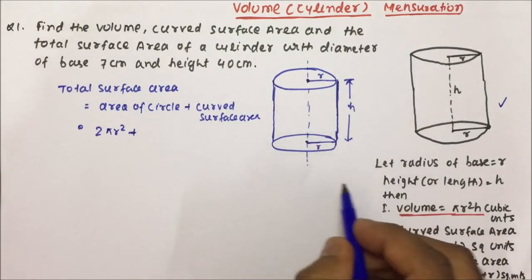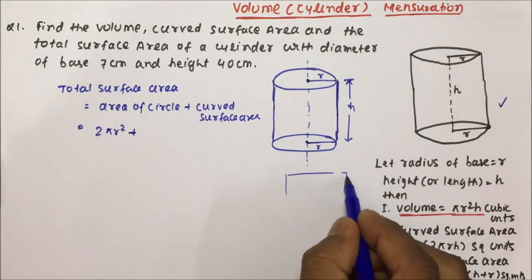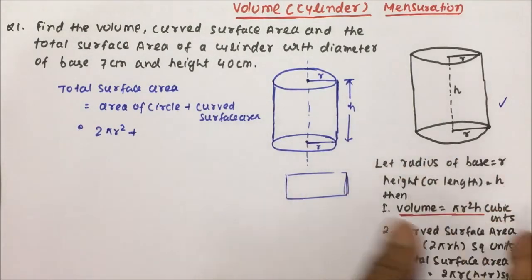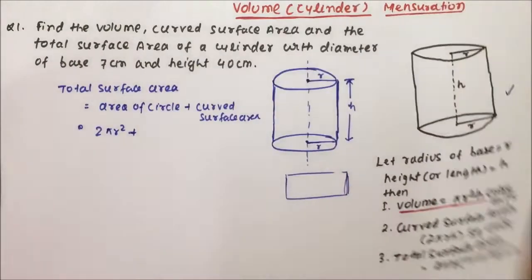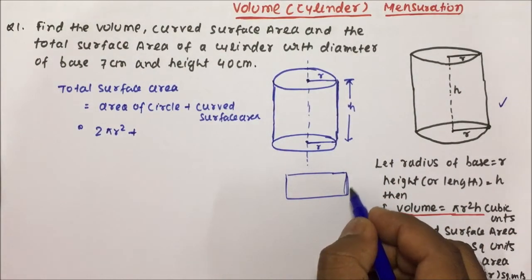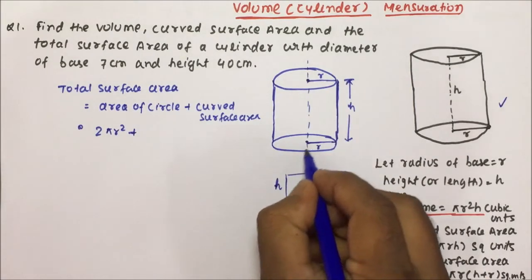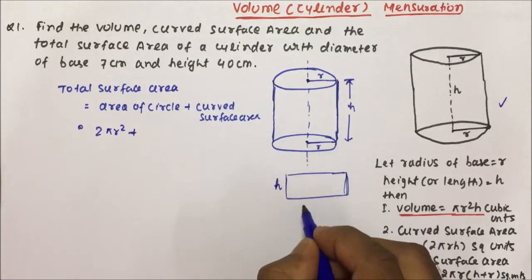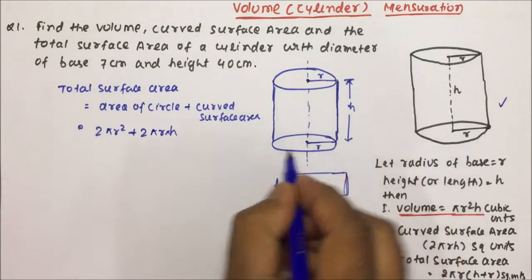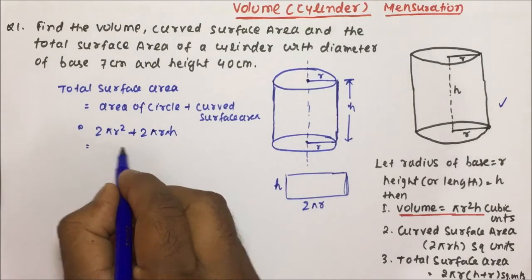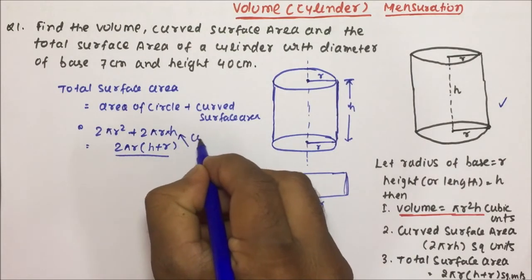The area of two circles gives us 2πr². Now for the curved surface area — if you look at the cylinder and open it out, the curved surface will look like a rectangle. If you take this page and fold it, it becomes a curved surface area. The rectangle area is length × breadth. Here length is h and breadth is the circumference of the circle, which is 2πr. So the curved surface area is 2πrh. Taking 2πr common, the total surface area becomes 2πr(r + h).